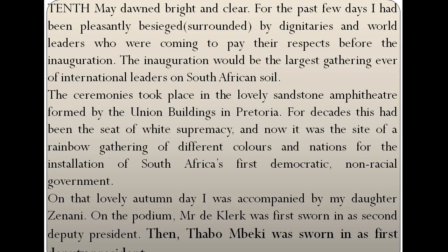On that lovely autumn day — autumn is symbolic here. When autumn comes, the leaves of the trees fall down, and after some time we have spring, the happy season, with new greenery. For the African people, it was certainly the autumn day, because it was the last time of the white rule and now their own rule was there. On that lovely autumn day, Nelson Mandela was accompanied by his daughter Zinani.